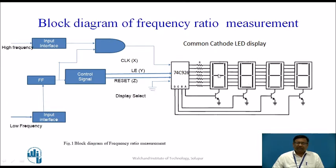Since IC74C926 contains decade counters, the maximum number that can be displayed on the four digits is 9999. So the maximum frequency ratio of two frequencies that can be measured using IC74C926 is 9999.